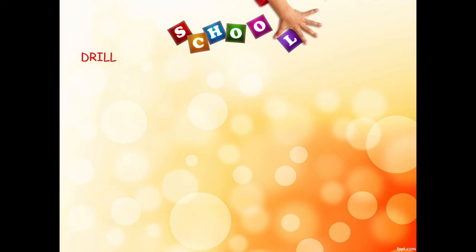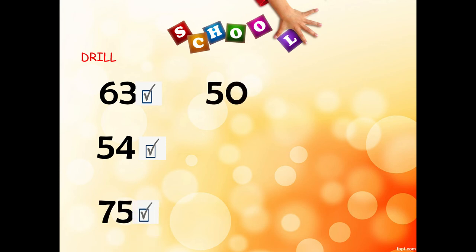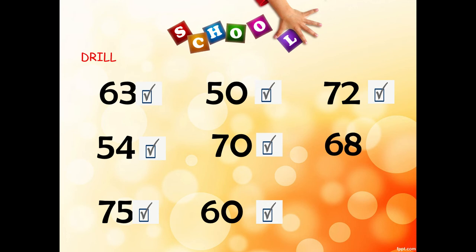Try to tell me the number as fast as you can. What number is this? 63. Next, 54. Very good. Next one is 75. This is number 50. Next one, 70. What number is this? Yes, it's 60. This is number 72. This one is 68. And the last one, 67. Very good KG.